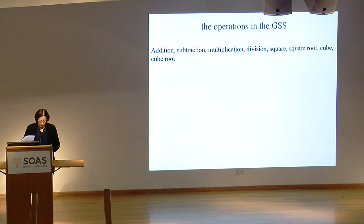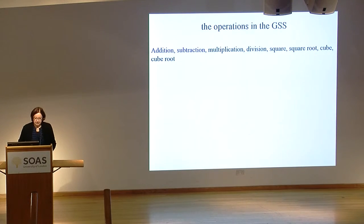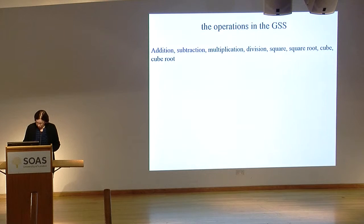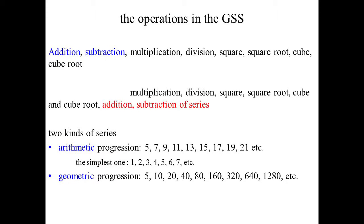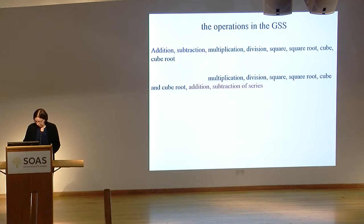Usually in the Sanskrit mathematical tradition there are eight operations. But in the Ganita Sar Sangraha, the first two — addition and subtraction — are missing and are replaced by the addition and subtraction of series.